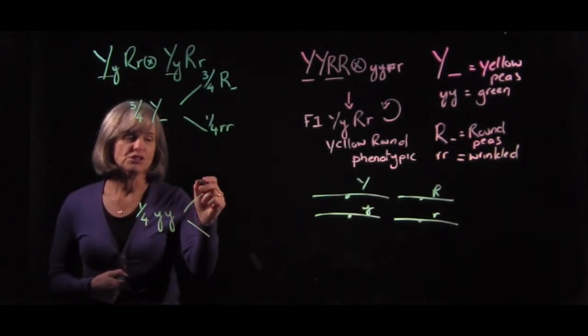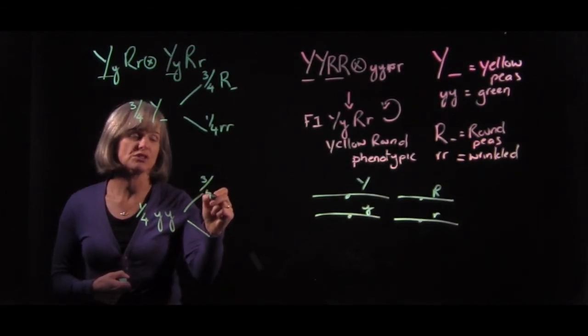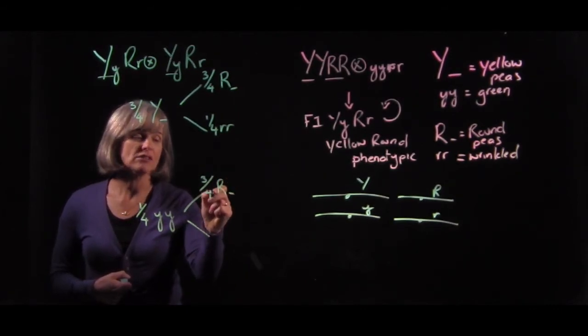And to calculate the final proportions of the four resulting phenotypes, we can go ahead and use the product rule and simply multiply across. Product rule, independent events.